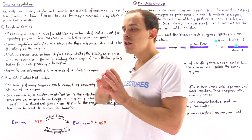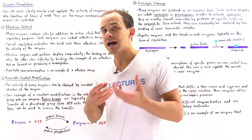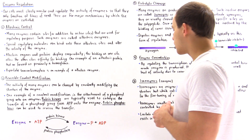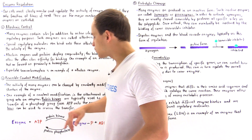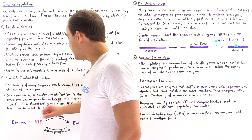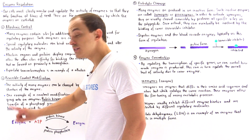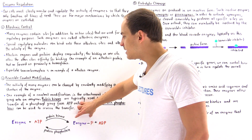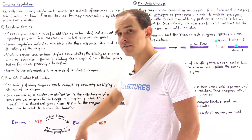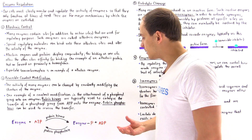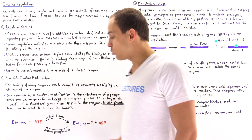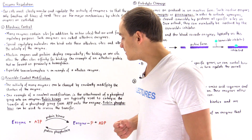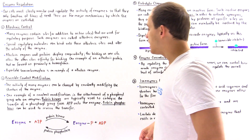The reverse process — the removal of that phosphoryl group from the enzyme — is catalyzed by a different enzyme known as protein phosphatase, which we'll discuss in more detail in a future lecture. So we have the enzyme and ATP; protein kinase transfers a single phosphoryl from ATP onto the enzyme, producing a modified complex that can either activate or inactivate the enzyme, also producing ADP. To reverse this, protein phosphatase removes the phosphoryl group and reforms the ATP and the original enzyme.